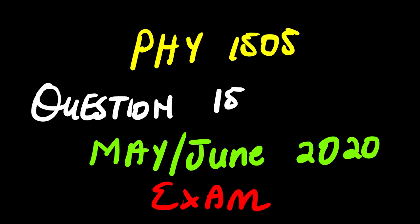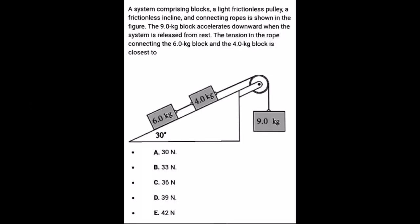The lesson for today is Physics 1505. We'll be focusing on question 15, May/June 2020 exam. The scenario says: a system comprising blocks, a light frictionless pulley, a frictionless incline, and connecting ropes is shown in the figure. The 9.0 kg block accelerates downwards when the system is released from rest. The tension in the rope connecting the 6.0 kg block and the 4.0 kg block is closest to — so we are looking for this tension here.